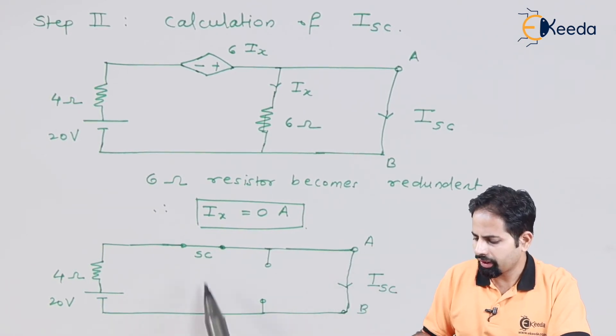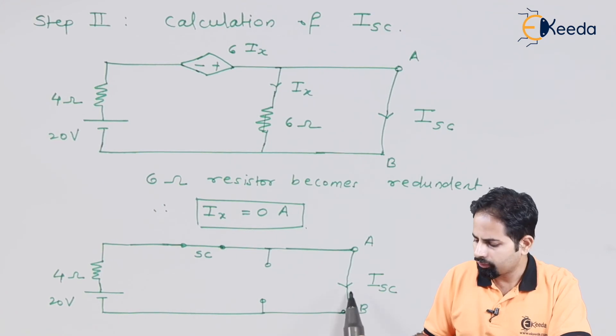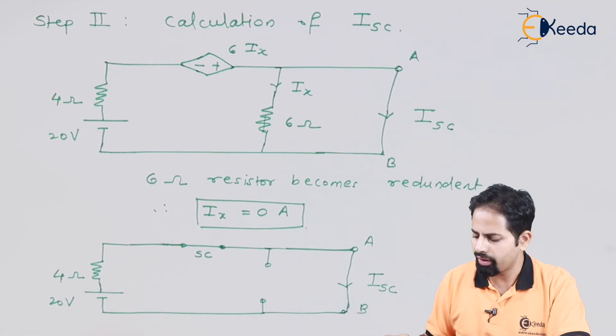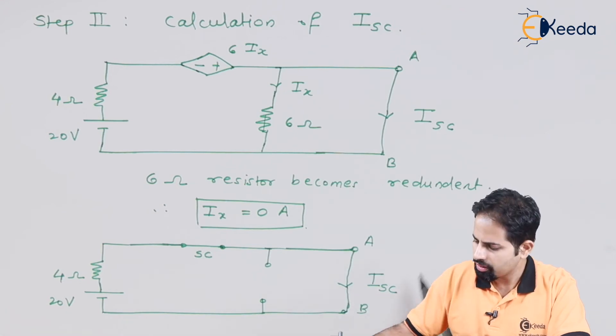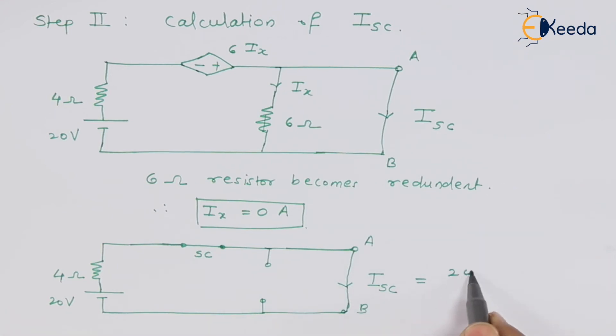And now because this is short circuit, this is also short circuit. Now this Isc current is very easy to calculate. So this current is going to be voltage divided by resistance. So it is going to be 5 amperes.